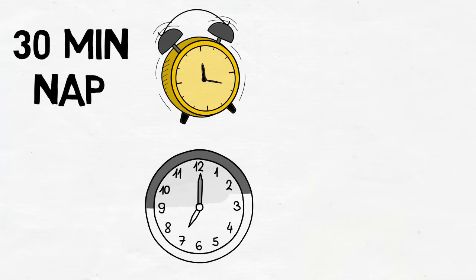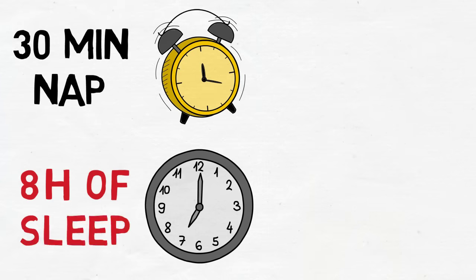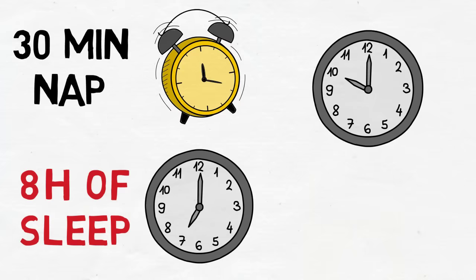But when he wakes up, it's already 7pm. Without even realizing it, he turned off that alarm and instead of napping for 30 minutes, he slept for 8 hours. Now he's just 3 hours away from his desired bedtime.